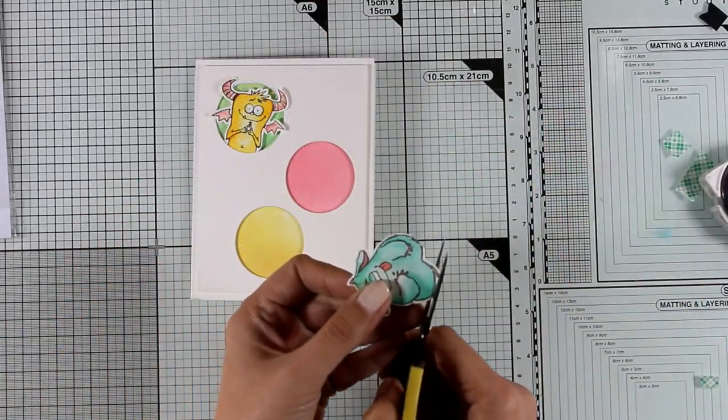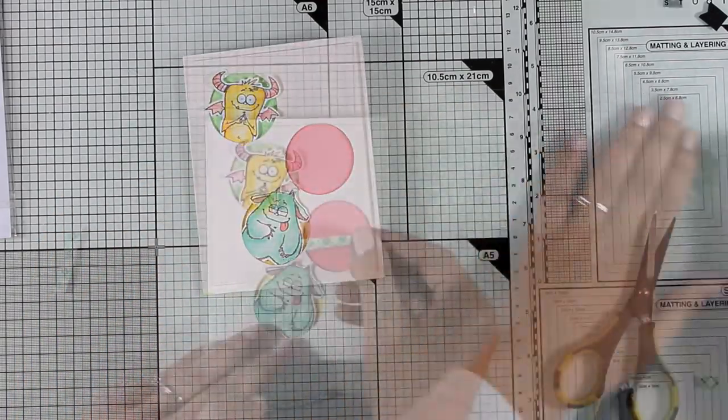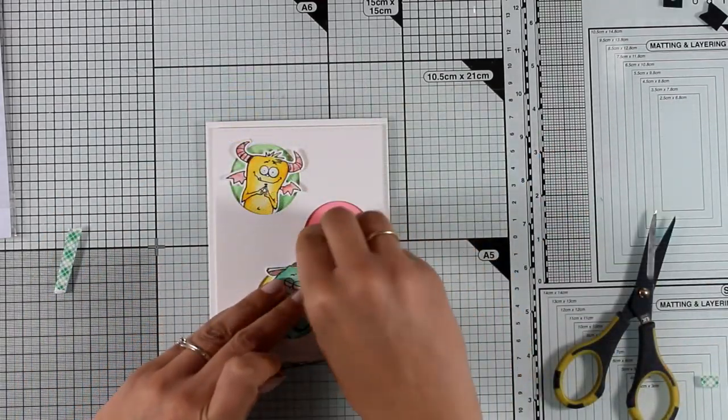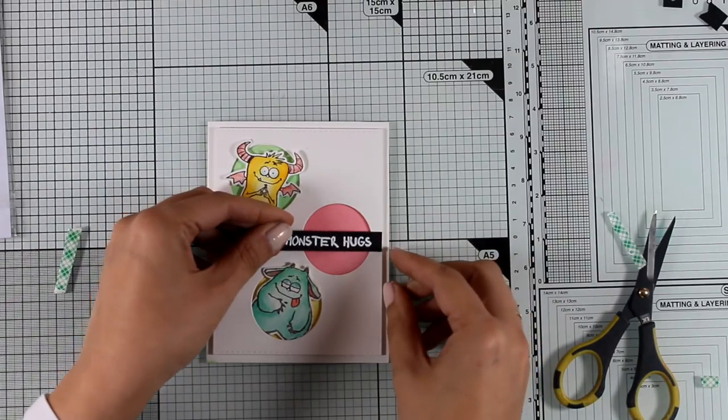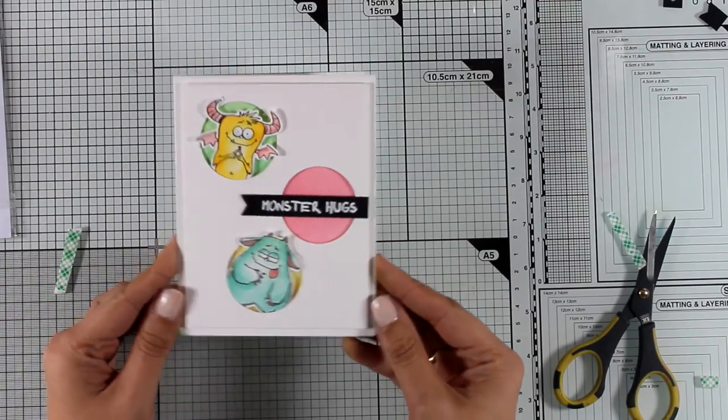The aqua is going to go inside the yellow window and finally on the pink window is where I am going to nest my sentiment. I have already stamped and embossed it with white embossing powder on a piece of black cardstock and my card is ready.